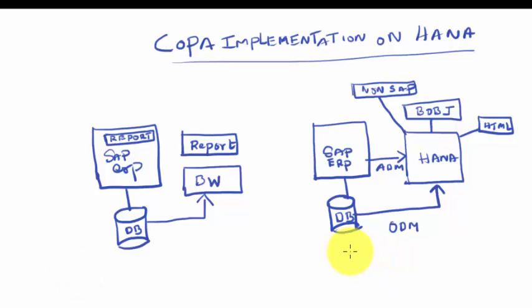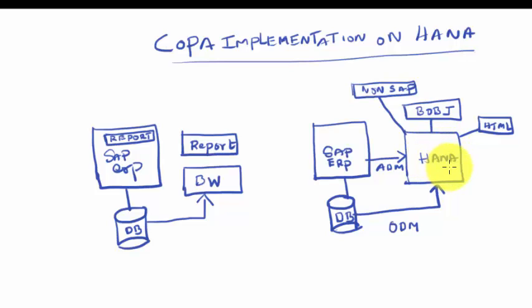In HANA, let's take the COPA report as an example. The COPA report has some fundamental tables like CE1 and CE2 for the transaction tables, and then we have master tables which are characteristics — MARA for materials, KNA1 for customers, and LFA1 for vendors. What we do is get only those application tables from the SAP ERP into the SAP HANA system, then build models on top of those tables into a report. You can build that report using a BusinessObjects tool or application, or you can also use non-SAP tools.